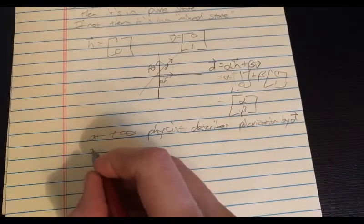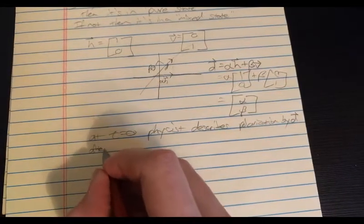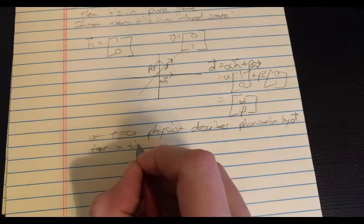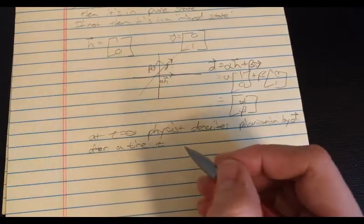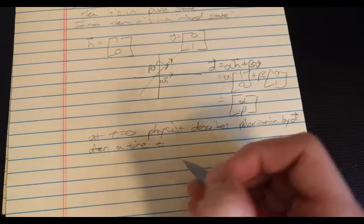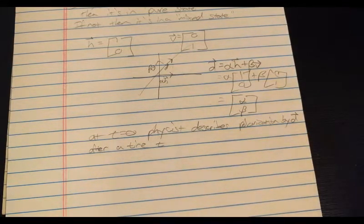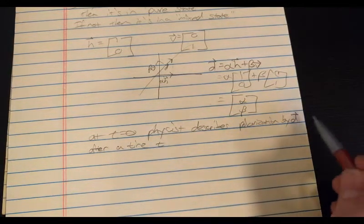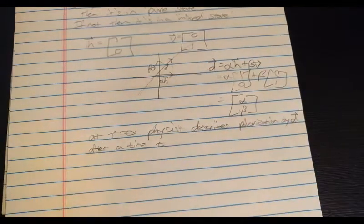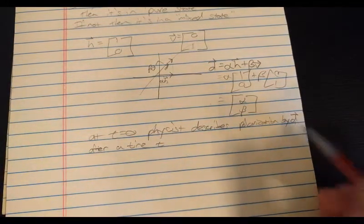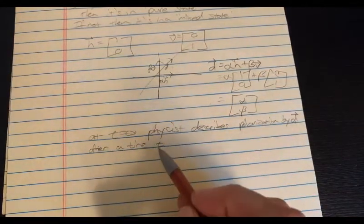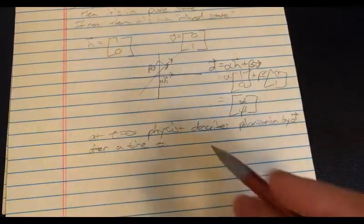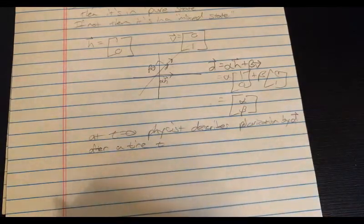By some vector D. But after a time T not zero, then he doesn't know what state his system is in. And he also cannot describe his system, well, his laser light polarization, he can't describe that by a single vector after some time. He has to describe it with something else.